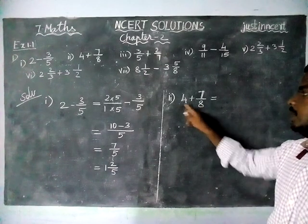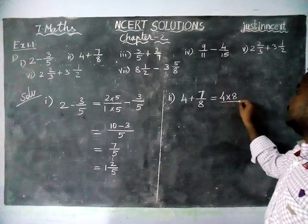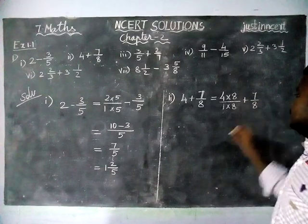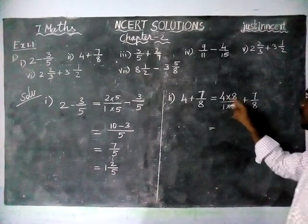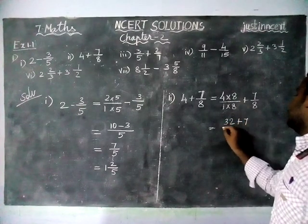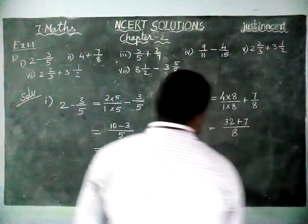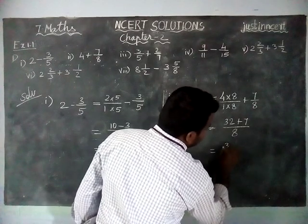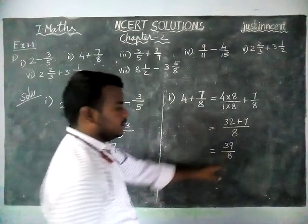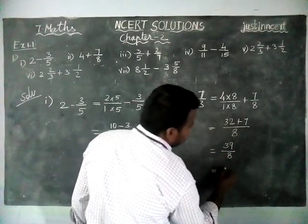The same thing, we have to make the denominator common. 4 into 8 divided by 1 into 8 plus 7 by 8 is equal to 8 fours are 32 plus 7. Now denominators are same. So we are taking as common denominator 8.